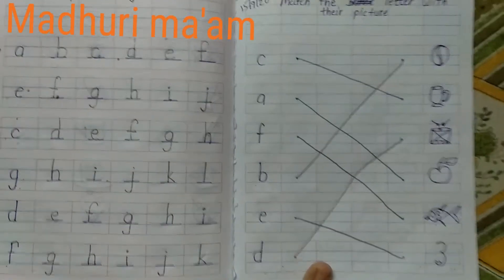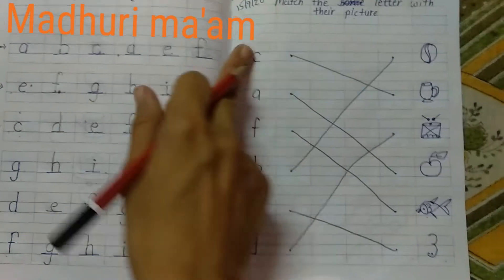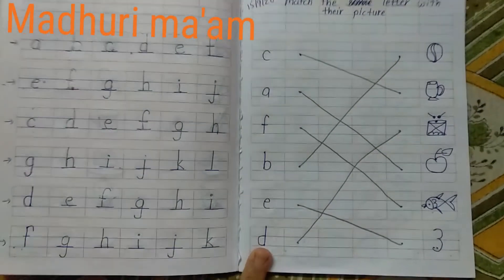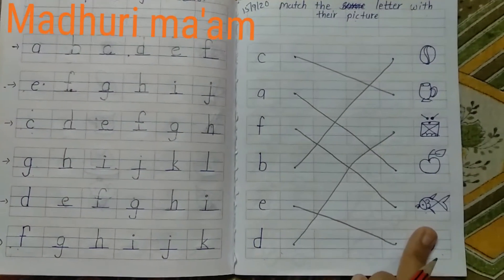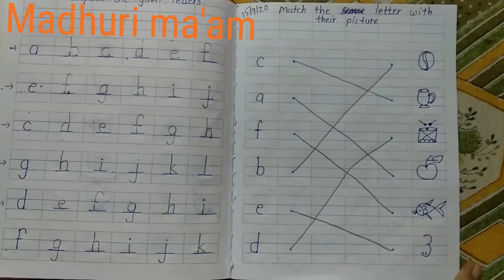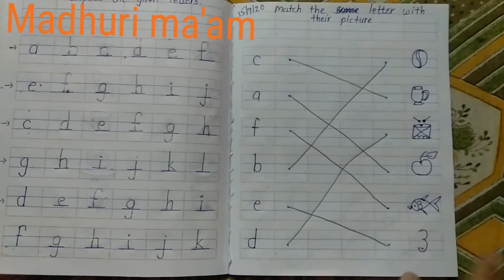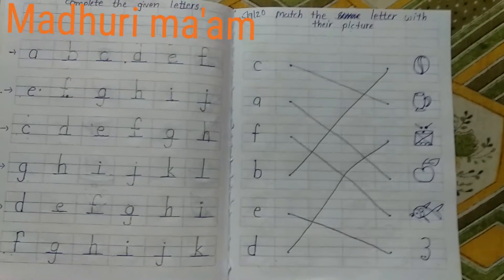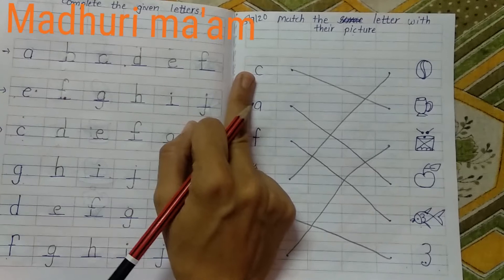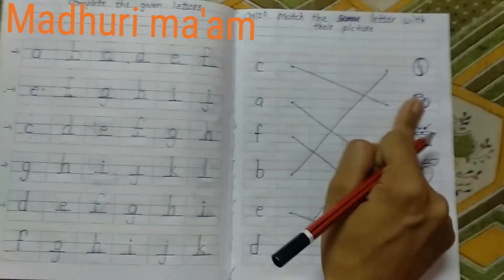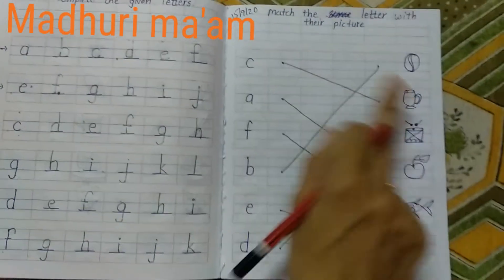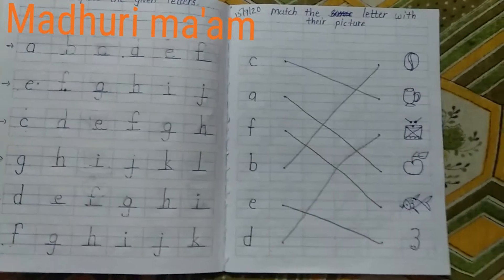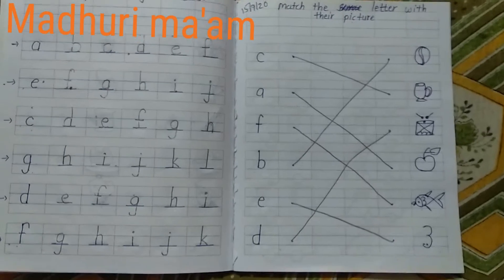You'll have to put it like that and then match with those related pictures. Which letter is this? This is small C. So C is to be matched with cup — okay, you have to match C with cup.